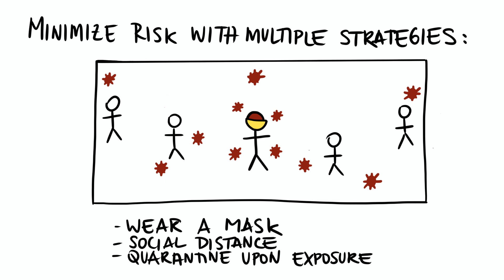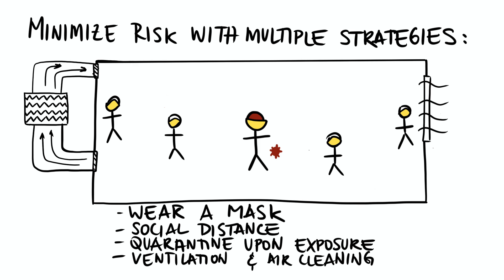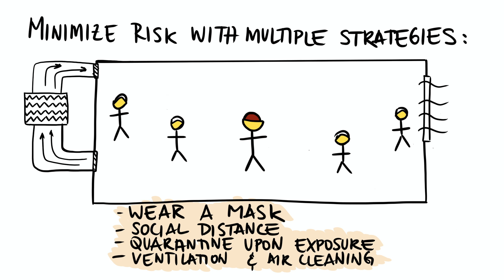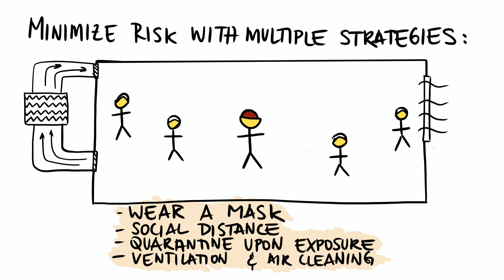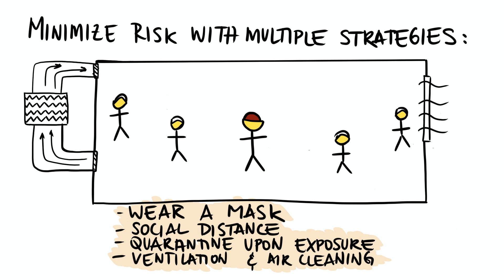The closer you are to somebody, the more virus you will encounter, so try to stay at least six feet apart. To minimize the risk of long-range aerosol transmission and super spreading, we must use ventilation and air cleaning, and still wear masks to reduce the amount of virus you breathe in or may release. Reduce the number of people indoors so the chance that somebody is infected goes down. You cannot ventilate your way out of a short-range transmission scenario, but you must ventilate your way out of a long-range aerosol transmission situation. Always use multiple strategies in case one fails.